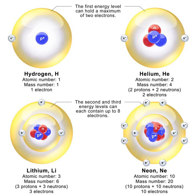The most common nuclide of the common chemical element lead, 208Pb, has 82 protons and 126 neutrons, for example. The table of nuclides comprises all the known nuclides. Even though it is not a chemical element, the neutron is included in this table. The free neutron has a mass of 939,565,413.3 eV/c², or 1.674927471 × 10⁻²⁷ kg, or 1.00866491588 u. The neutron has a mean square radius of about 0.8 × 10⁻¹⁵ m, or 0.8 fm, and it is a spin-½ fermion.